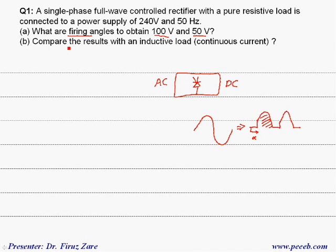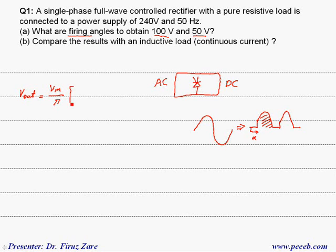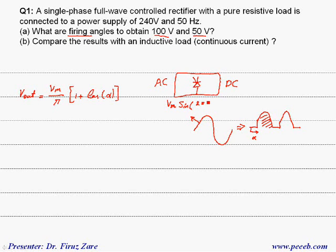When we have a resistive load, the output voltage cannot be negative. For this case the output voltage equals Vm over pi times of (1 plus cosine alpha). That means if the input voltage is Vm times sine(2πt/T), then the output voltage depends on the firing angle and the magnitude of the input voltage.